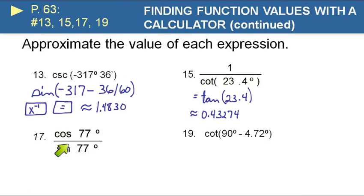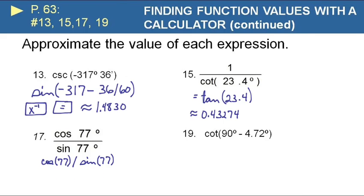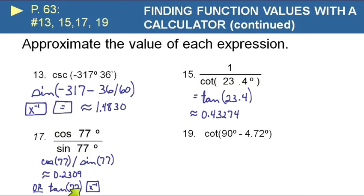For cosine of 77 over sine of 77, be careful with your parentheses. Enter cosine of 77, close the parentheses before you divide, then divide by sine of 77, close parentheses, and press equal. It's approximately 0.2309. Alternatively, since cosine over sine equals cotangent, you could just do tangent of 77 and then take the reciprocal to get the same answer. Never hit the reciprocal button until you've closed out your function.